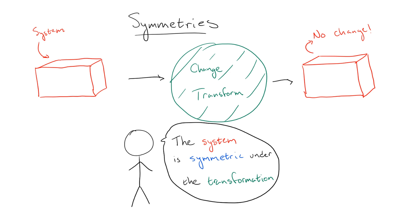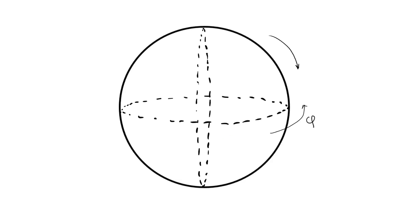So, for example, if our system is a sphere, then no matter how we rotate the sphere, nothing will change. So, the system has a symmetry under the transformation of rotations. Now, this seems simple enough, but it can get complicated fast.